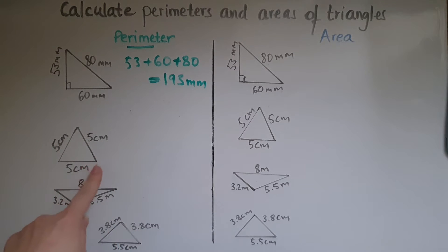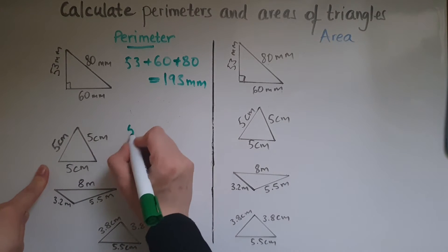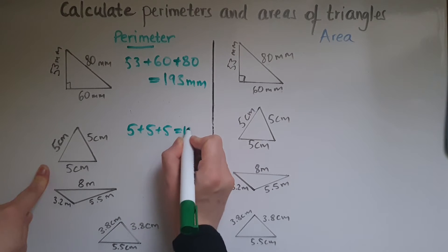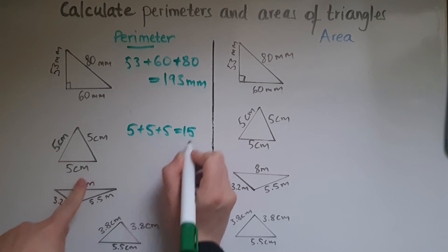Now we've got this other triangle. So we have 5 and 5 and 5, which is 15 centimeters.